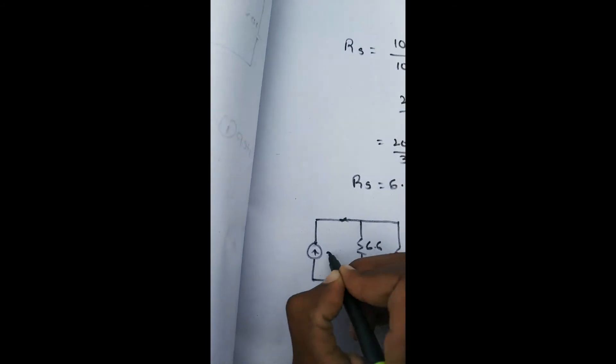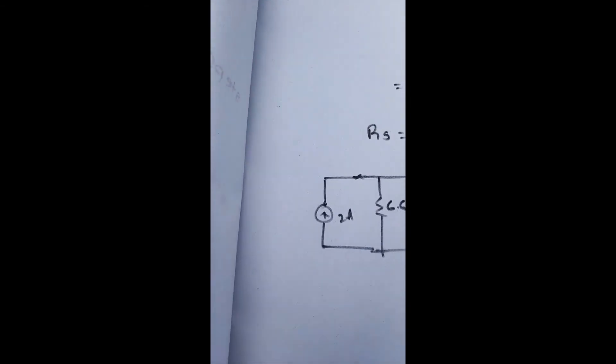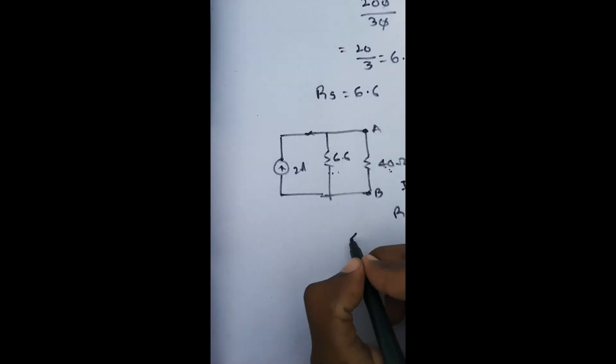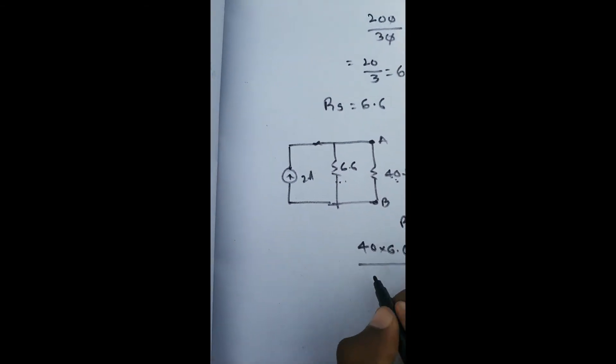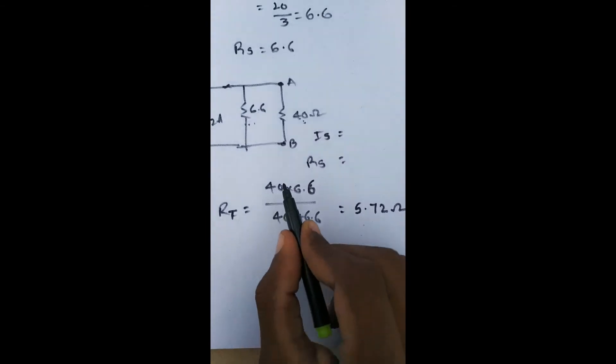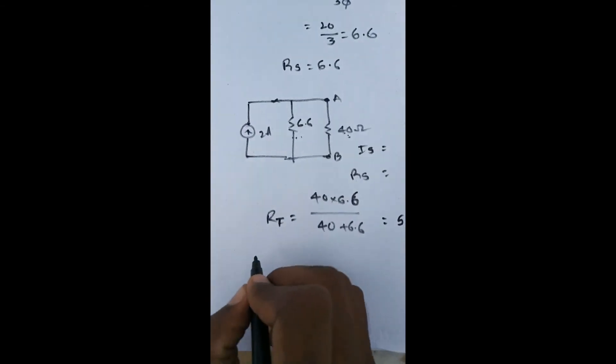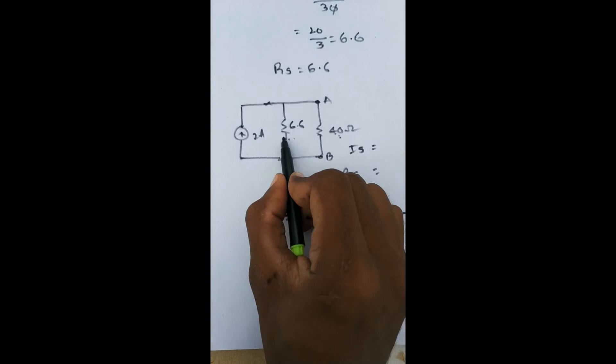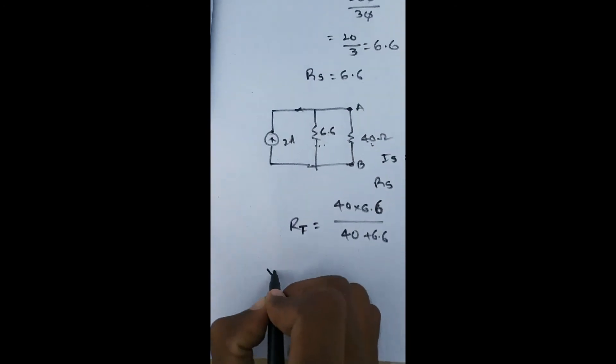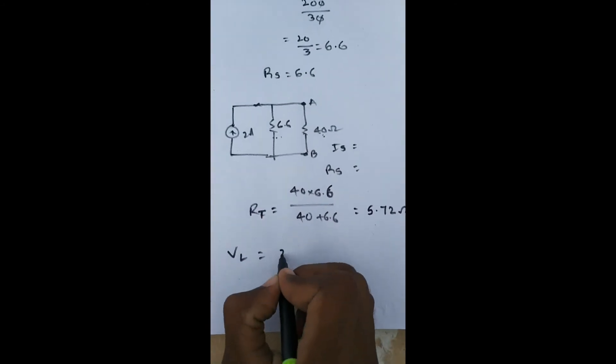This is 40 ohms, this is 6.6, this is 2 amperes. So from this we apply to RL value at AB. By taking reference at 40 ohms, then the current value - we simplify this by combining parallel resistances - RT is equal to 5.7. Then we can find VL value. VL is equal to IR where I value is 2, so VL equals 2 into 5.72.